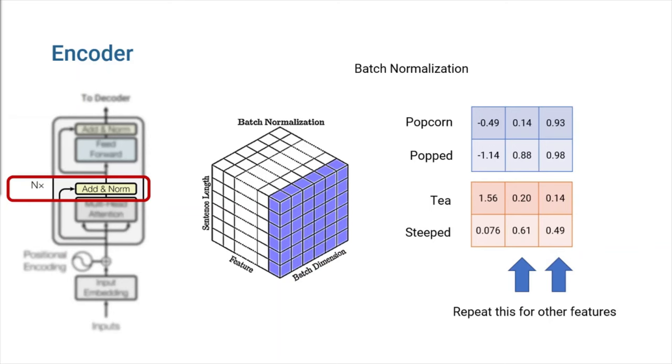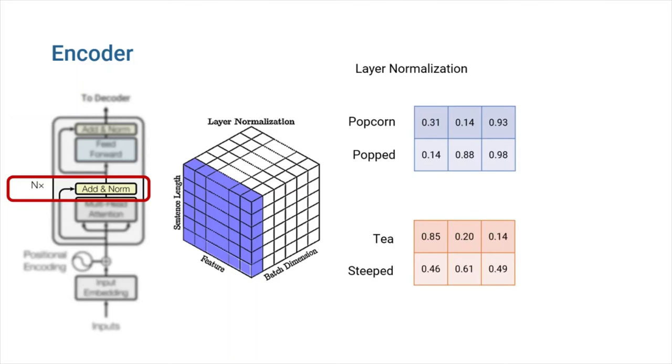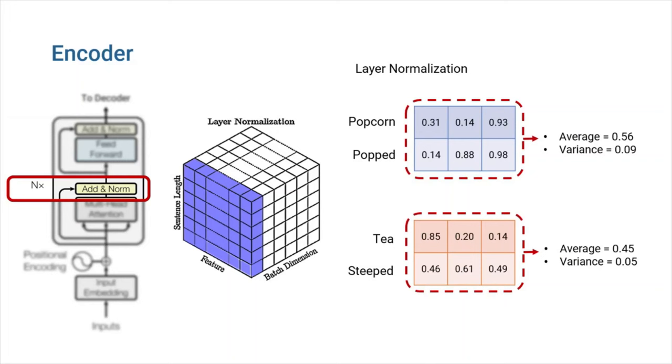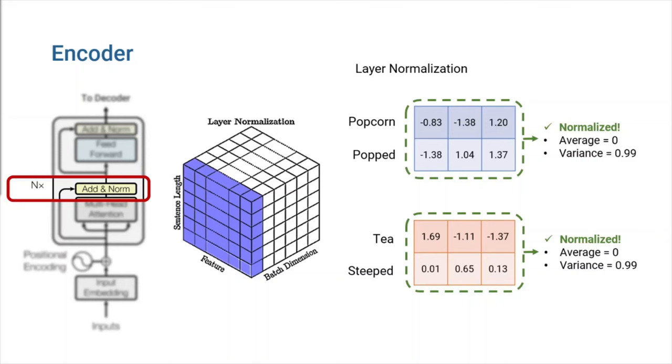In the layer norm, we take the average and variance from all of the features of a single sentence instead. Let's see what it means using the same two sentences. Here we don't care about the fact that these two sentences are from the same batch. In order to obtain the average and variance, we simply use all of the features in every sentence. And again, after normalization, we'll have matrices with average of zero and variance of one. Layer normalization was initially intended to be used in recurrent neural networks. The developers of transformer architecture chose it as their preferred method of normalization because it performs exceptionally well, especially in NLP tasks.